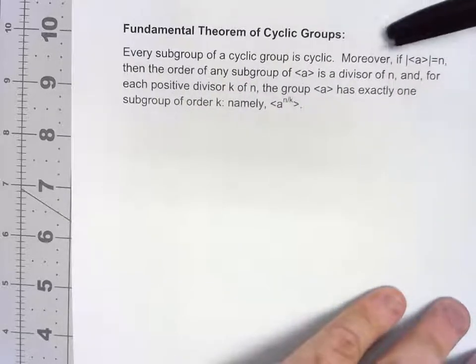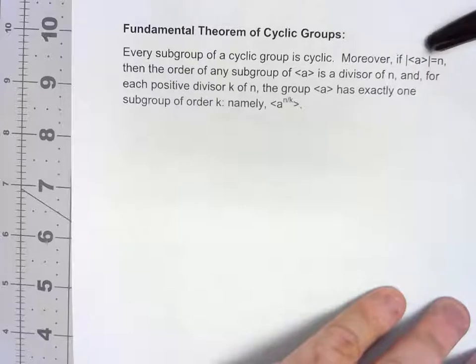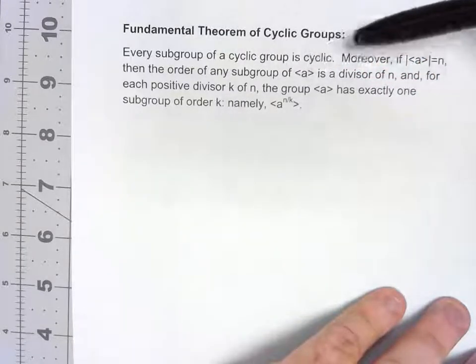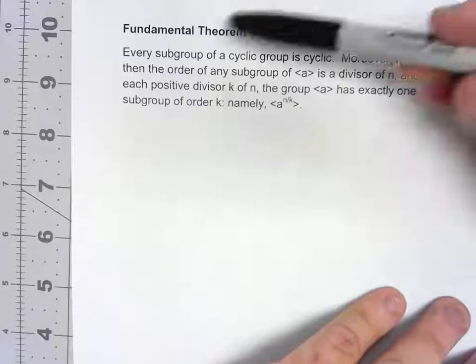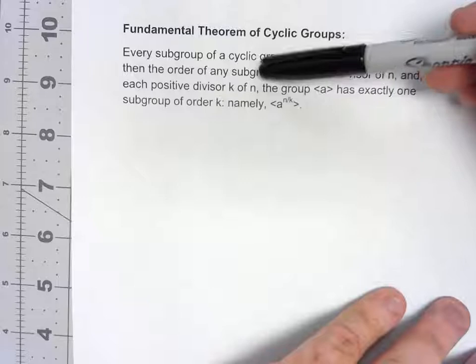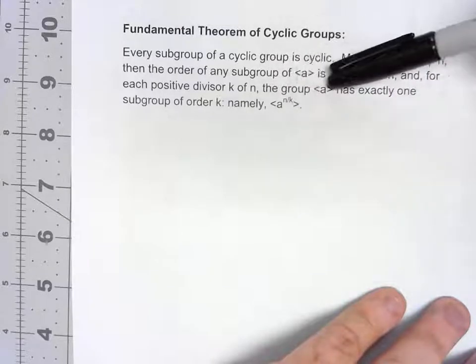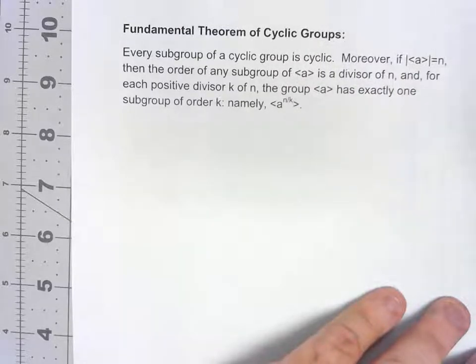However, it goes further. If the order of a subgroup generated by an element is equal to n, then the order of any subgroup of that thing is a divisor of n. And perhaps the most important thing, for each positive divisor of that number, the group has exactly one subgroup. That says a lot.